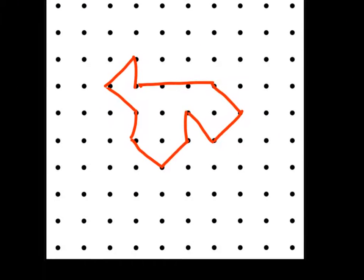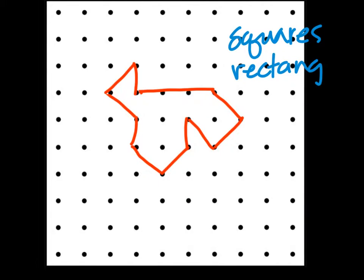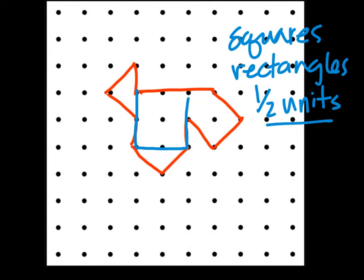This is a shape that we can say is easily doable with this method. For example, we need to be able to find squares, rectangles, and half units, nothing less than that. When I look at this, I see straight up right here there are four squares: one, two, three, four that I can find.